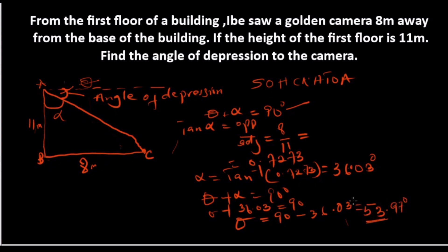With this, you can understand how to solve for angle of depression. It's just about interpreting the question — it's not difficult at all. Take it one step at a time. The question says from the first floor of a building, Ibe is standing on the first floor. Pick the height of the building, which is 11 meters. The camera is 8 meters away from the base of the building. Then you can easily solve for the angle of depression.